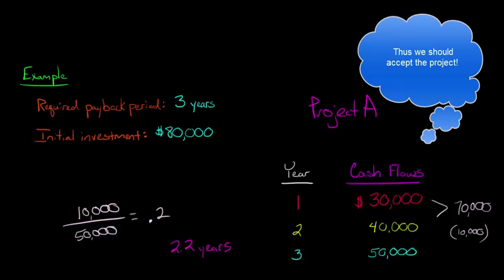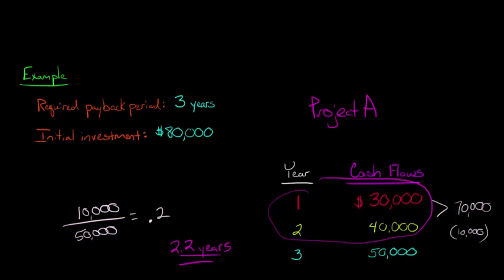I got that by just saying we know it's going to take these two years, and we know it's not going to take the full three years because we end up getting $120,000 if you add up all three years. So it's going to pay itself back sometime in year 3. When we're taking the $10,000 divided by $50,000,